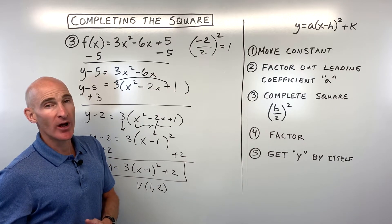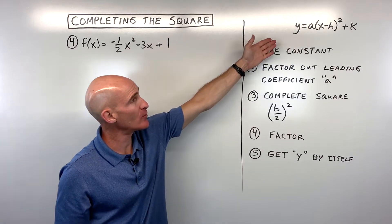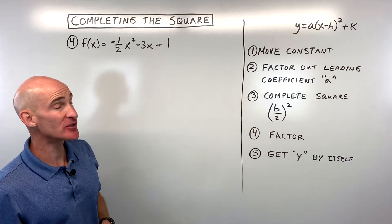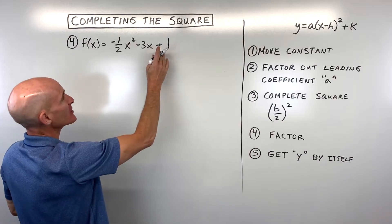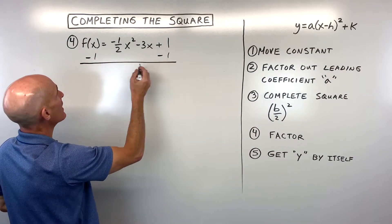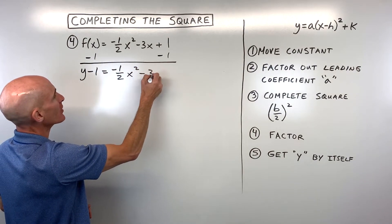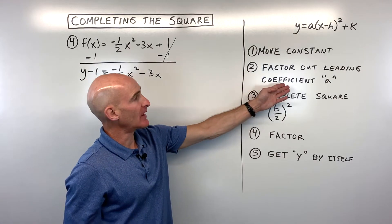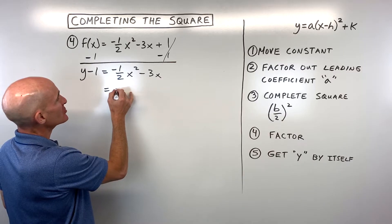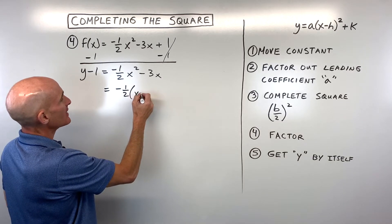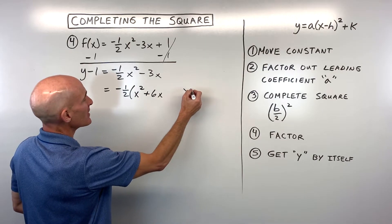Let's try one more, a little more challenging example. We've got f(x) equals negative one half x squared minus three x plus one. For step one, subtract one to get the constant to the other side: y minus one equals negative one half x squared minus three x. Now factor out the leading coefficient, negative one half — not the greatest common factor, just the a value. This gives negative one half times the quantity x squared plus six x, with a space to complete the square.